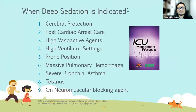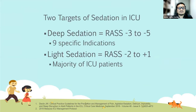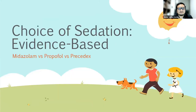The Malaysian ICU management protocol specifies only nine indications for deep sedation: cerebral protection, post-cardiac arrest care, high vasopressor requirements, high ventilator settings, prone positioning, massive pulmonary hemorrhage, cerebral bronchospasm or CPR, tetanus, and patients on neuromuscular blocking agents. So sedation in ICU divides into two targets: deep sedation (RASS minus three to minus five) only for these nine specific indications, and light sedation (RASS minus two to plus one) for the majority of ICU patients.